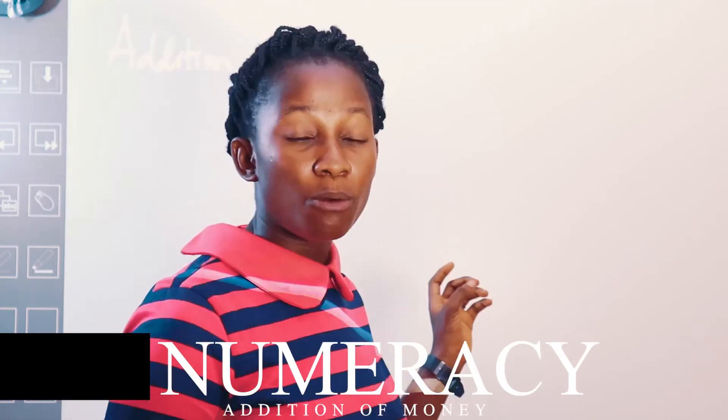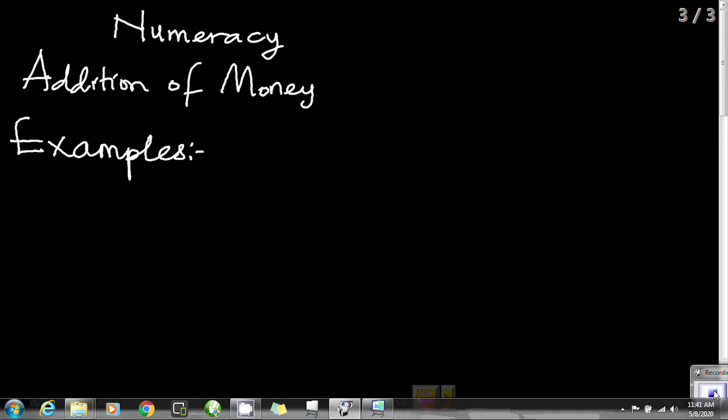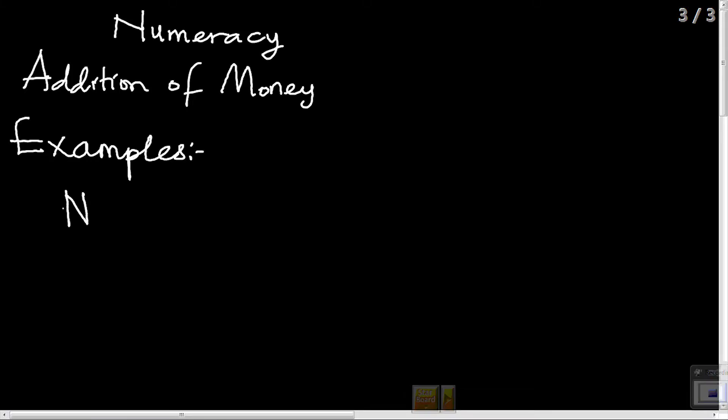That takes us back to the topic addition of money. Money would be either added with Naira or Kobo. Example: 9 Naira plus 3 Naira. The first thing we'll count at 9 Naira and will then count at 3 Naira. The sign plus here means count together. So let's count at 9 Naira using circles.